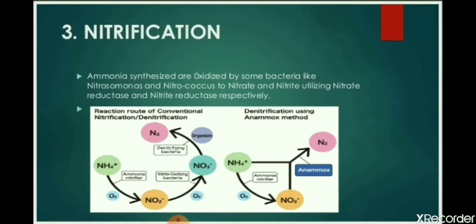Next step is nitrification. Nitrification is the biological oxidation of ammonia to nitrite, followed by the oxidation of nitrite to nitrate. The transformation of ammonia to nitrite is usually the rate-limiting step of nitrification. Nitrification is an important step in the nitrogen cycle in soil, and is an aerobic process performed by a small group of autotrophic and archaebacteria.